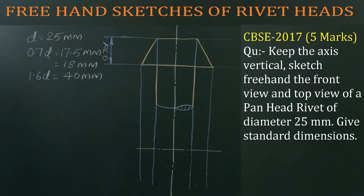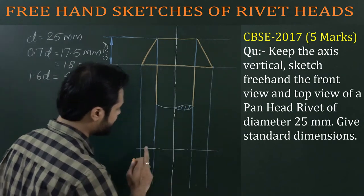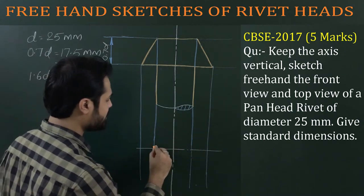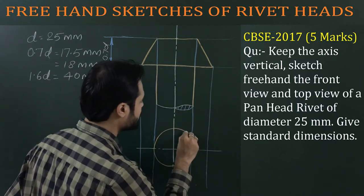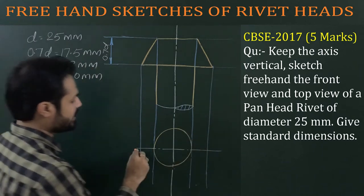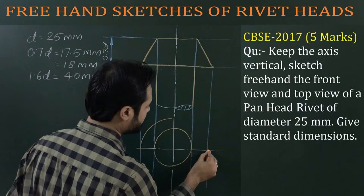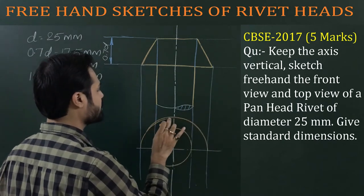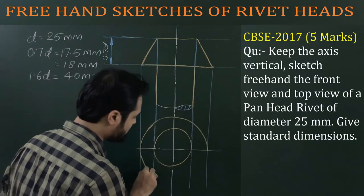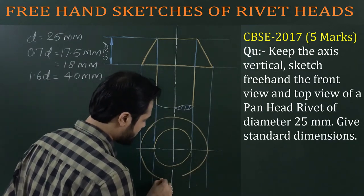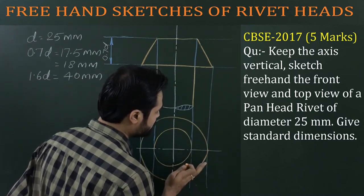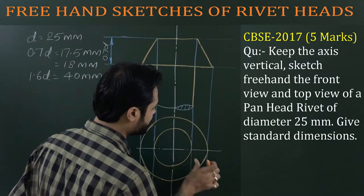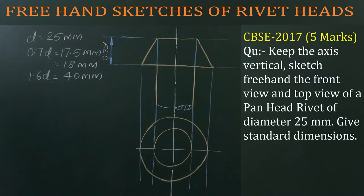For the top view, draw two circles: first, a complete and dark circle of diameter D, and second, another complete and dark circle of diameter 1.6D. Please don't use any instrument for construction work — this is the top view of the pan head rivet.